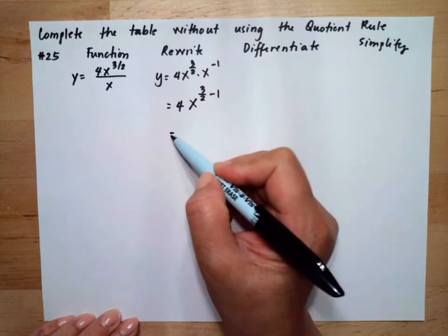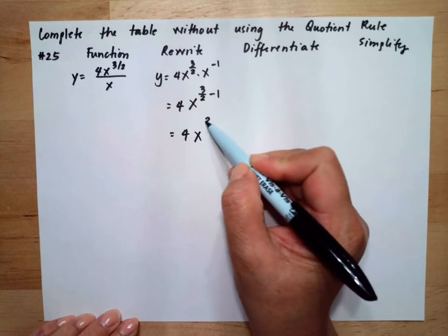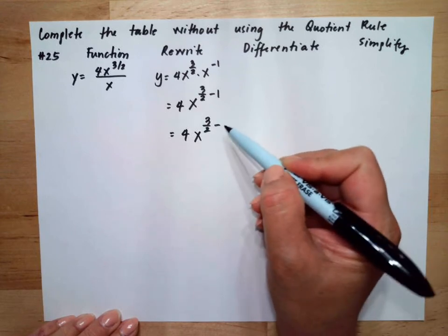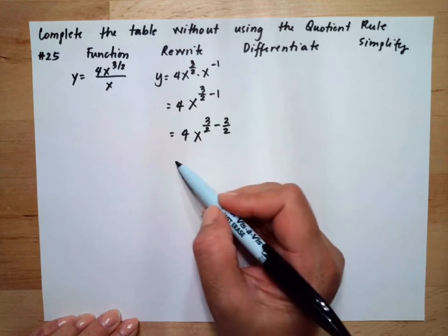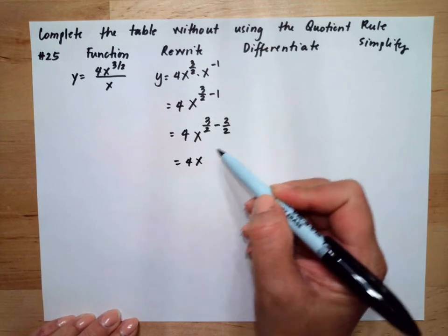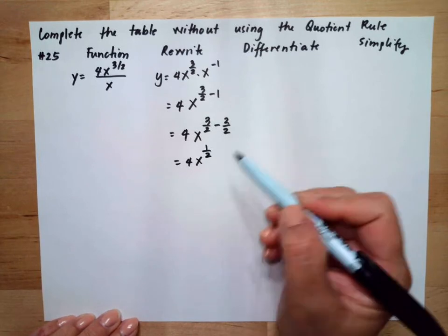Simplifying this, we have 3/2. Getting the common denominator, this will be negative 2/2. So this equals 4x to the 1/2.